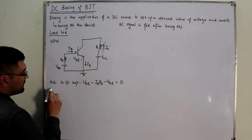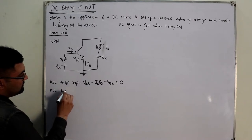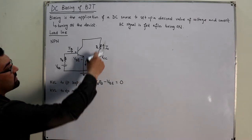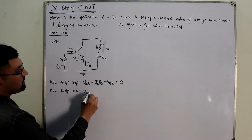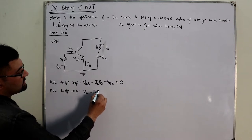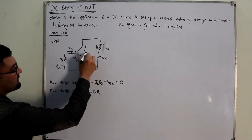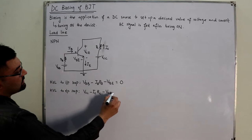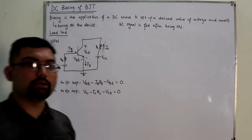Applying KVL to the output loop: V_CC − I_C·R_C − V_CE = 0.